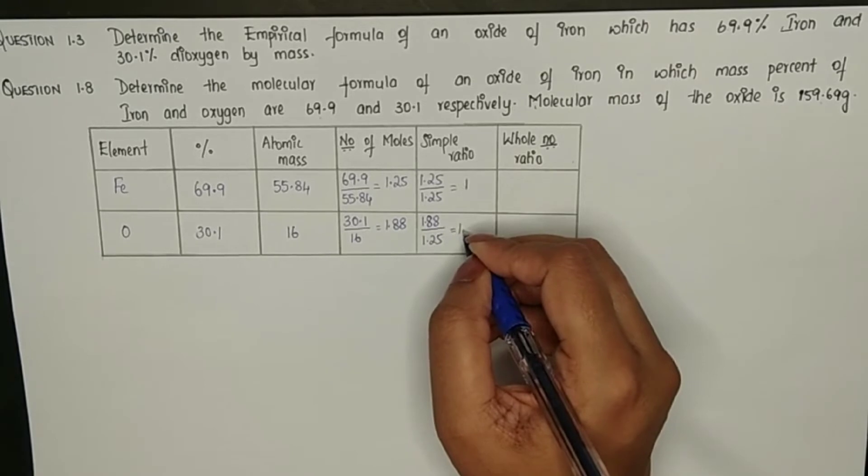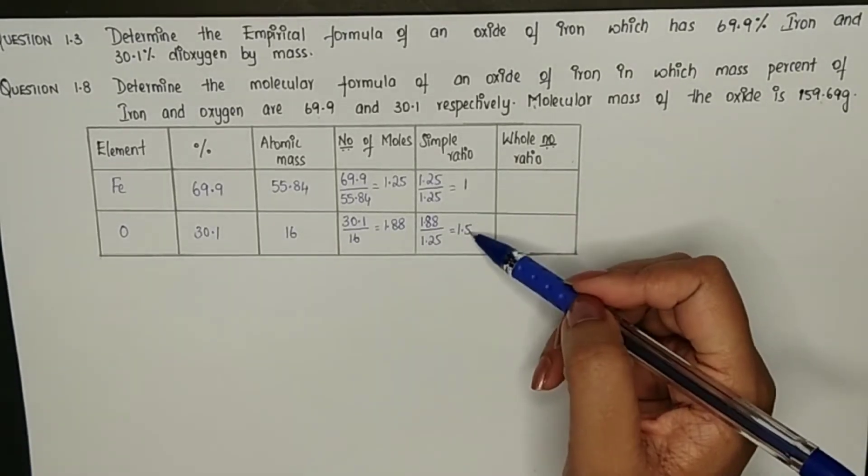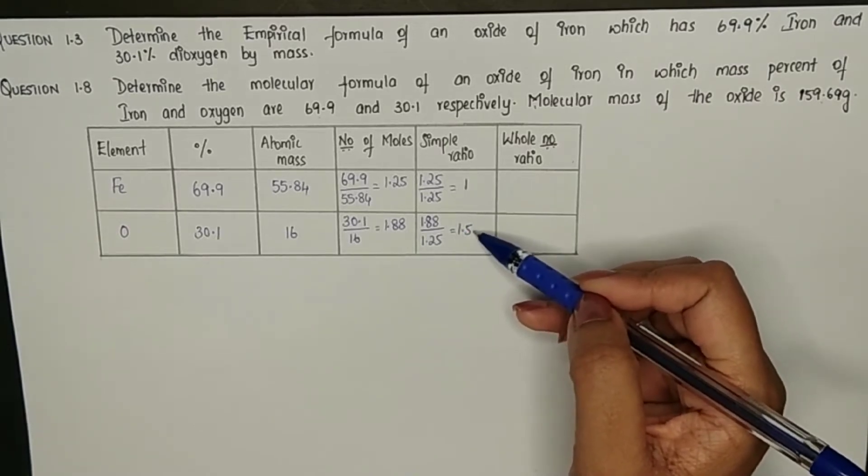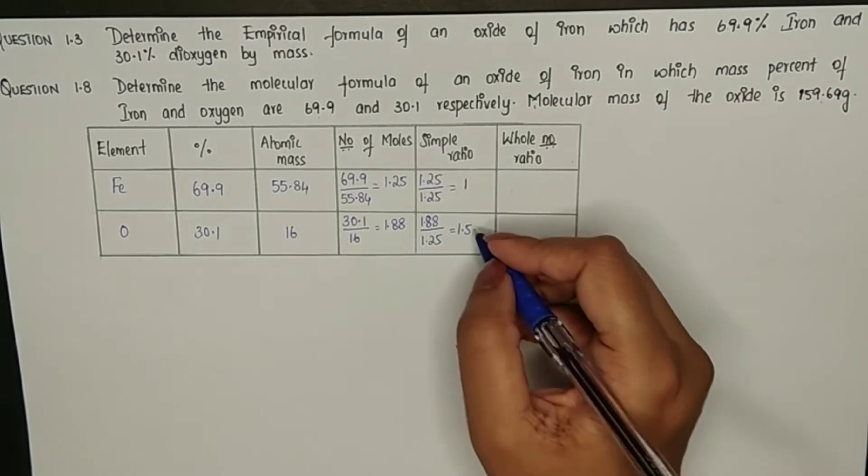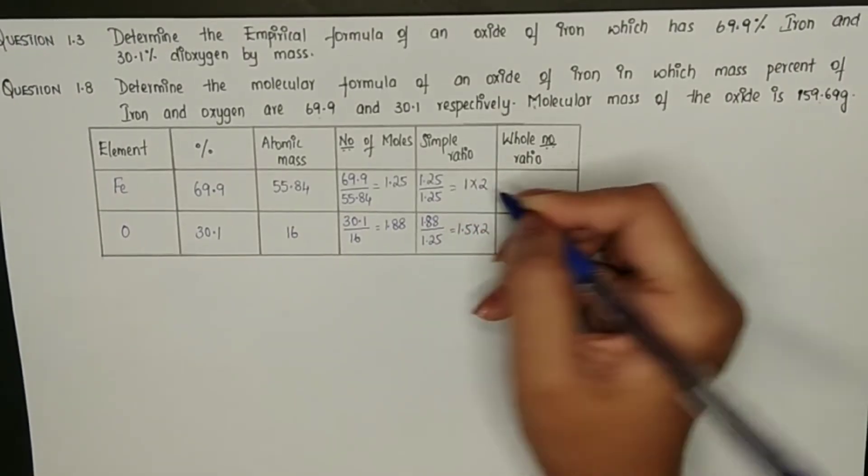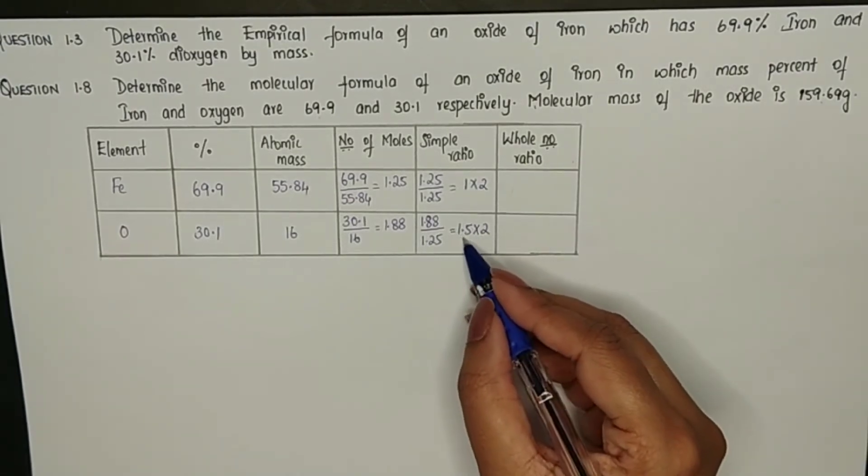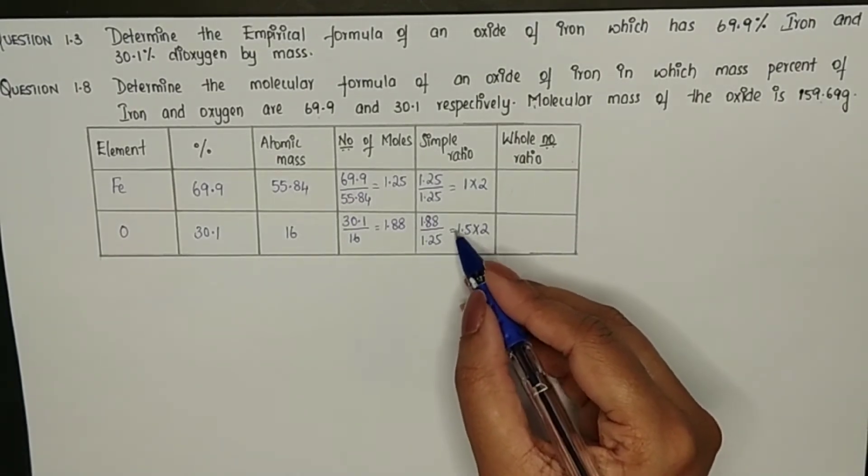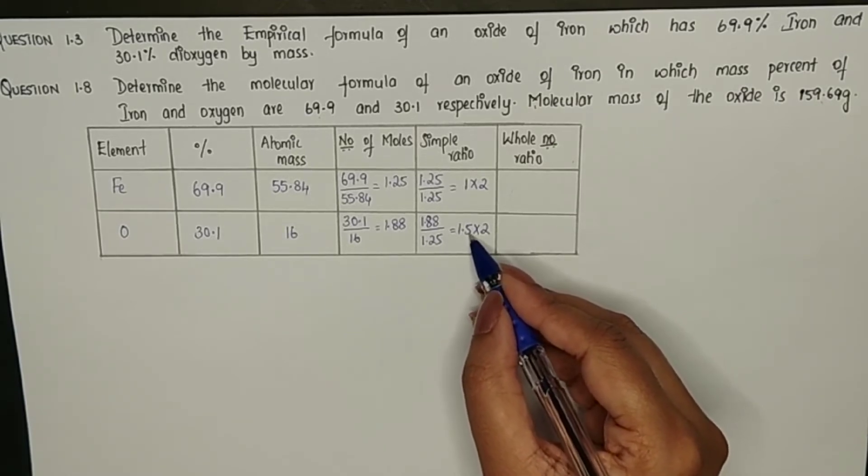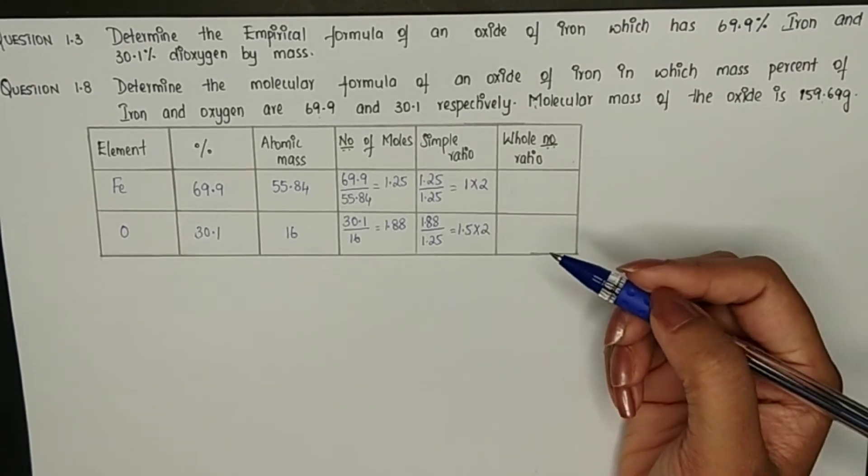Now we can't have a formula where we have a decimal. Whenever we have exact 0.5 as our decimal we have to multiply the numbers by 2. If it is greater than 0.5, say 1.8, I can easily round off to 2. But here because I got 1.5 which is exact, all values will be multiplied by 2. So the whole number ratio is 2 and this will be 3.